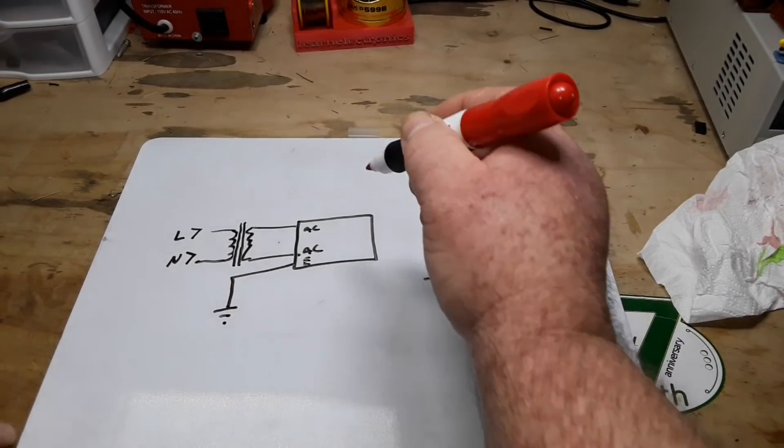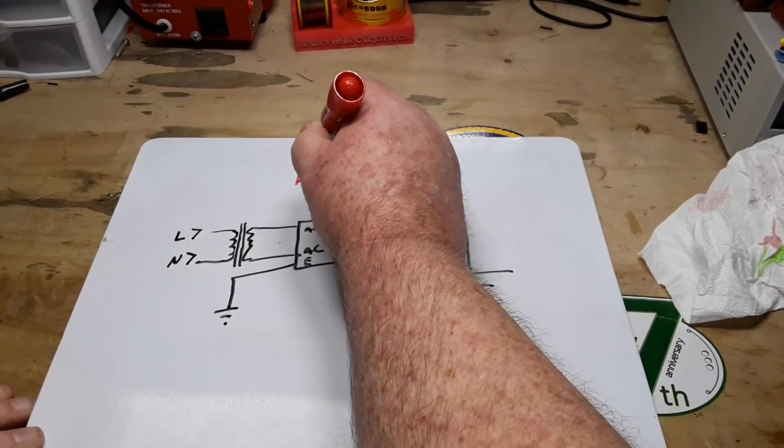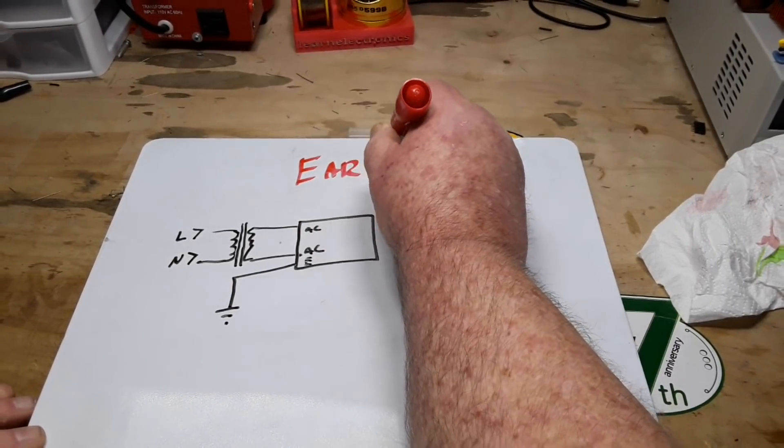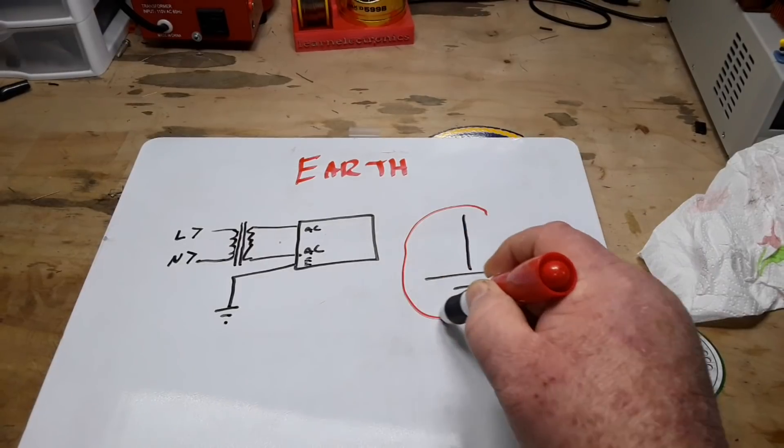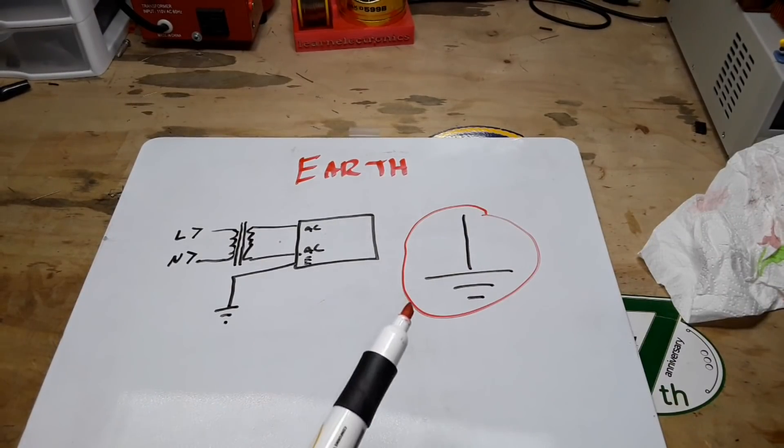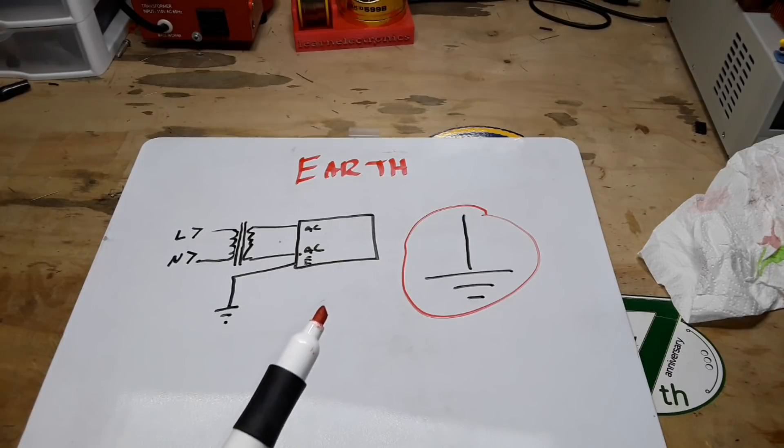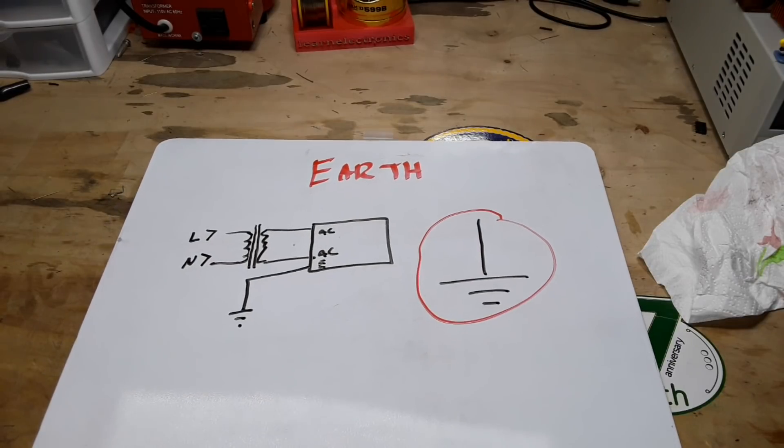Alright. Our first ground we are going to talk about is the earth ground. And you will see this symbol. This is the earth ground symbol, which is a symbol that I use in almost all of my schematics to represent ground. Is it proper for all the schematics? No. But when you see that symbol, you know that's ground. And I just use it as a generic.